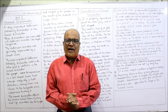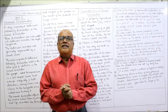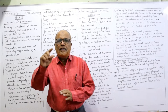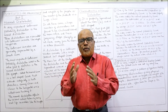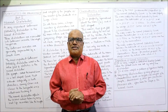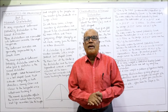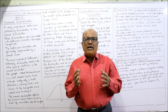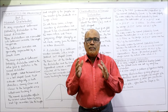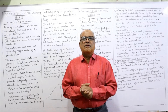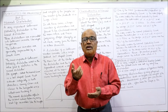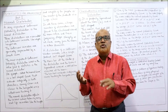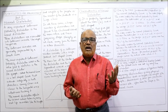Welcome to my channel. So far we have completed the discrete probability distribution. In this video I am going to start the continuous probability distribution. Discrete probability distribution is applied whenever the random variable takes whole number values, not fractions. Examples include number of persons, number of defectives — things which are in whole numbers. The important discrete distributions are binomial and Poisson, which we have already completed.